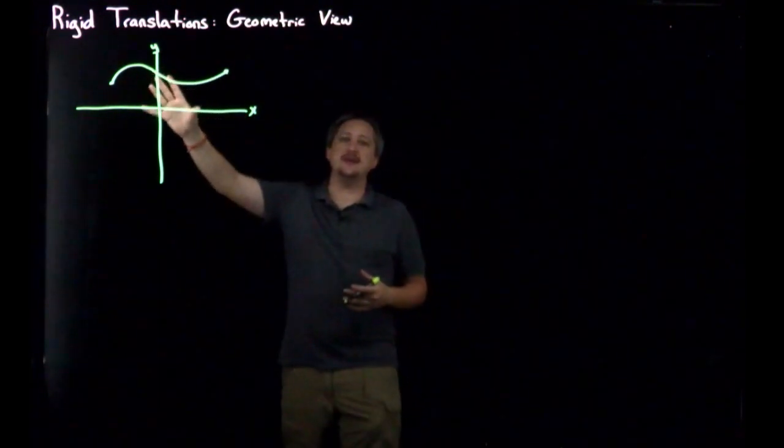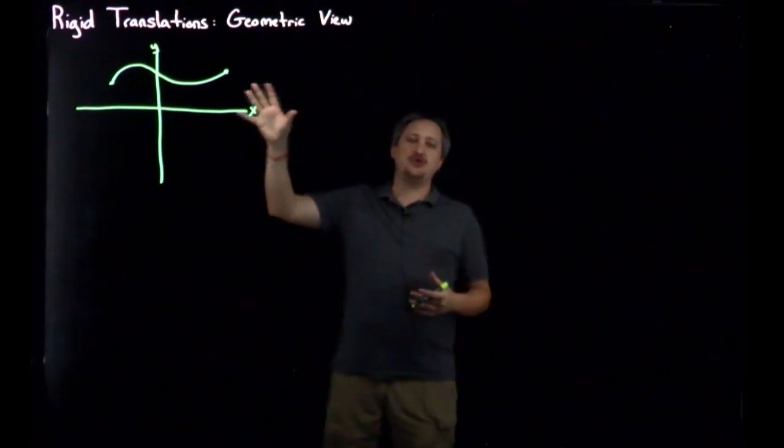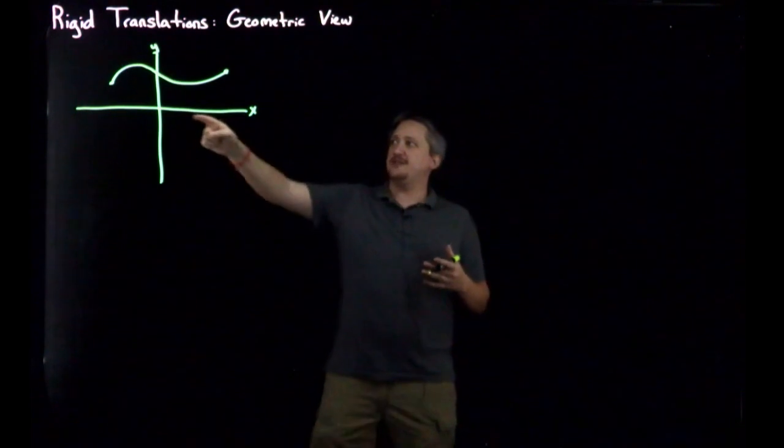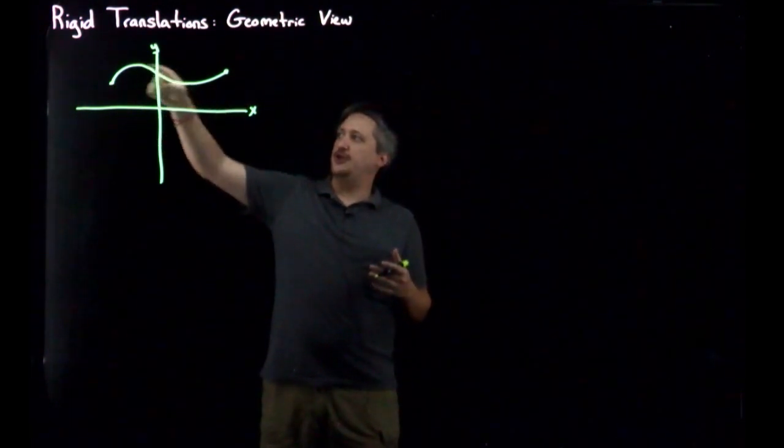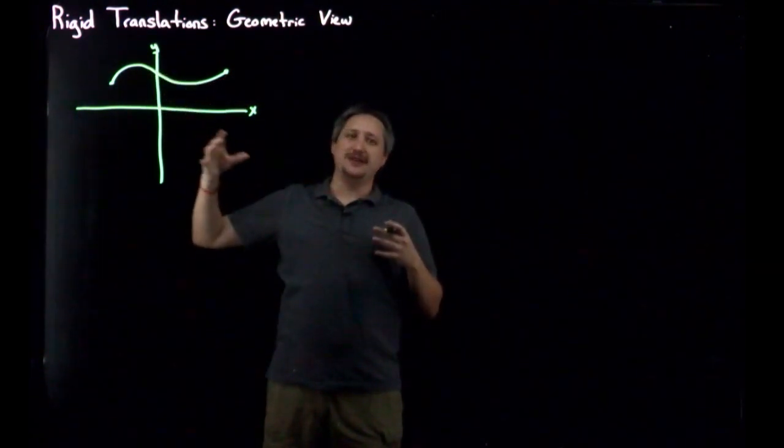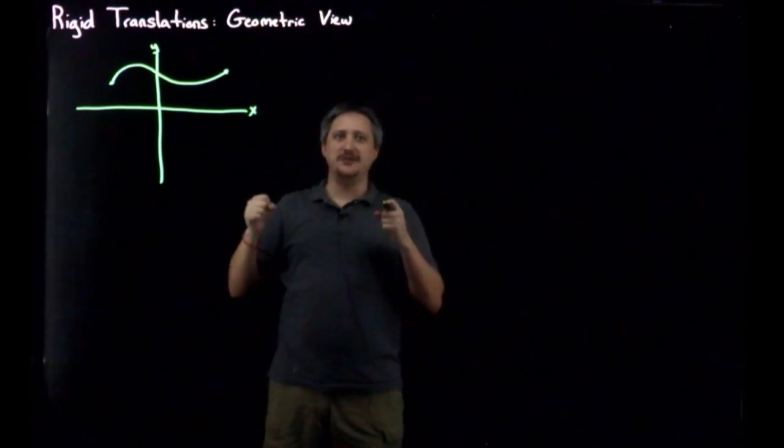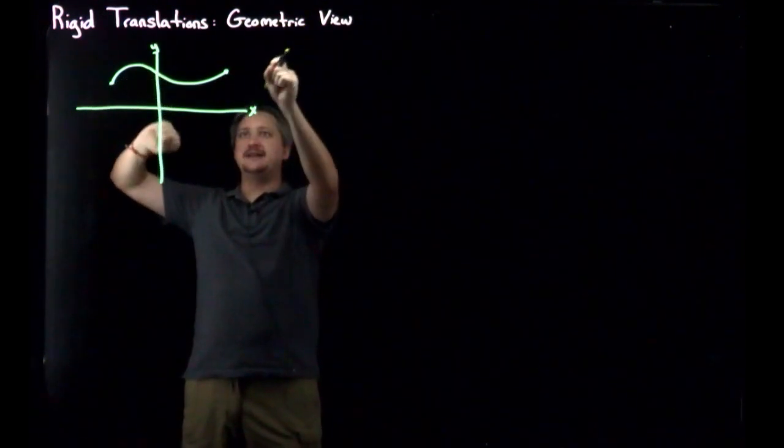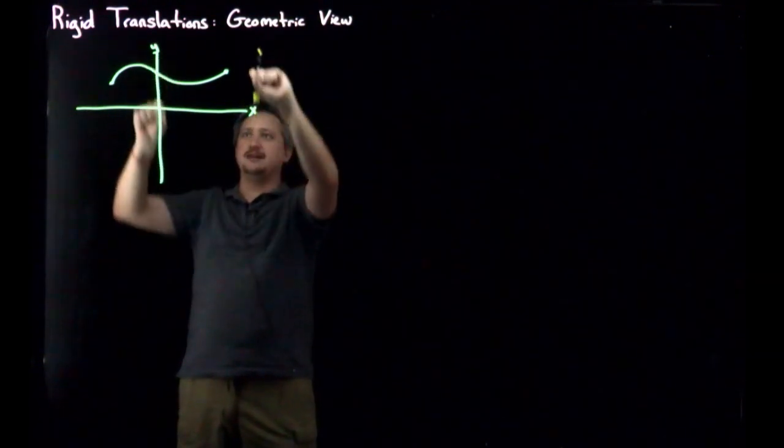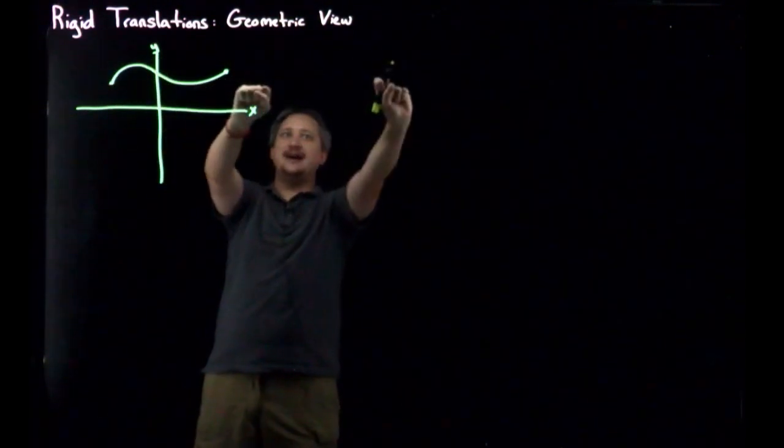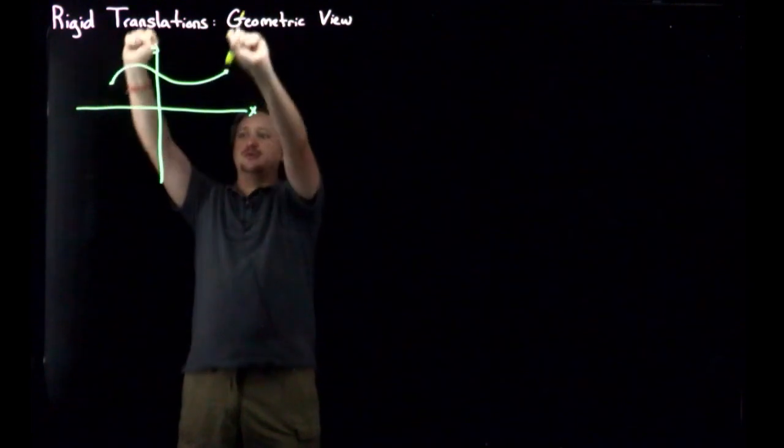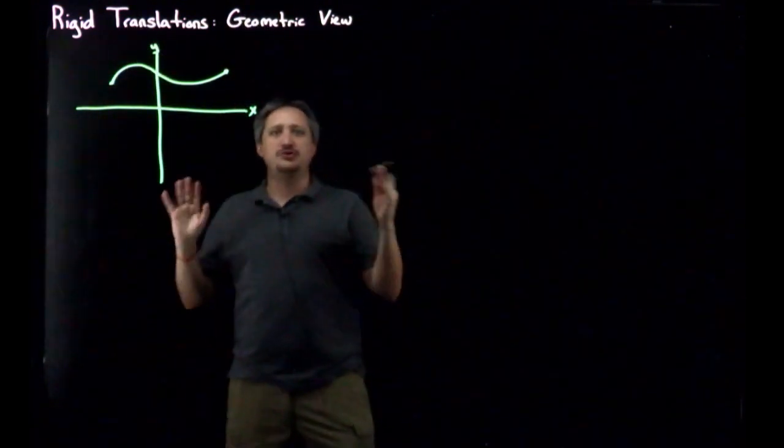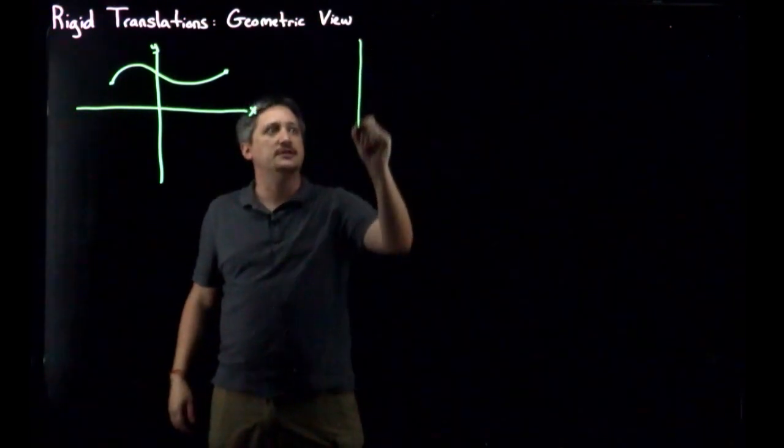What the rigid part means is that when we do that, we're not going to change the curve. So a way of thinking about this is if this graph, this curve here, is like a piece of cast iron or something—a piece of solid metal where we can't stretch it, we can't re-bend it, and we can't even turn it in place. All we can do is sort of slide it left-right or up-down. So an example, you know, again I'm not the best artist ever, so bear with me here.